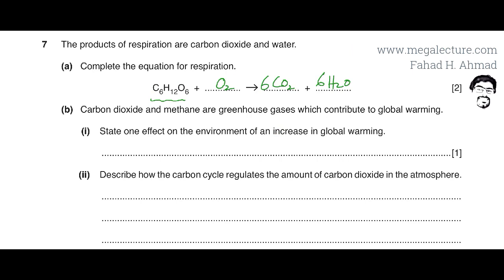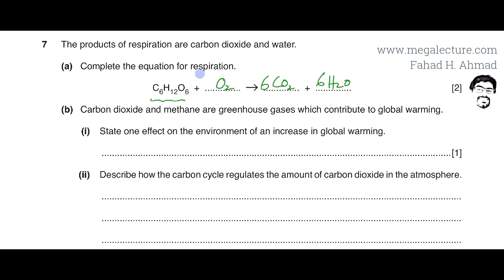The oxygens on the right side are 12 plus 6, that's 18 oxygens total. On the left side there are six oxygens in glucose, so there should be 12 more from O₂ — we multiply O₂ by six. This gives us the balanced equation for respiration.